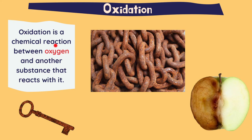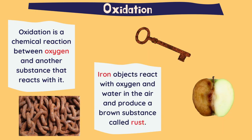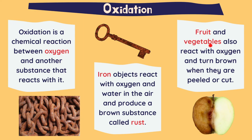The last chemical reaction is oxidation — a reaction between oxygen and another substance. Iron objects react with oxygen and water in the air and produce a brown substance called rust, which you can see in this image or this old key. Fruits and vegetables also react with oxygen and turn brown when peeled or cut. For example, this apple was cut in half and shows oxidation all around, then cut again to show the difference between the oxidized and fresh sides.